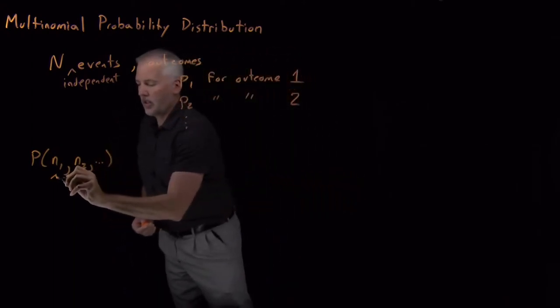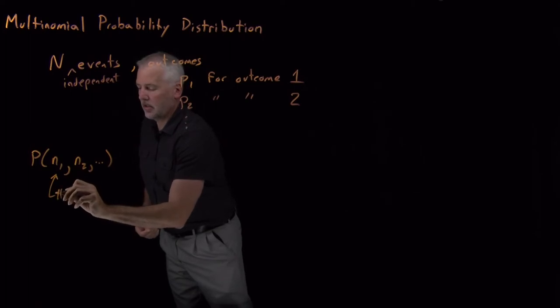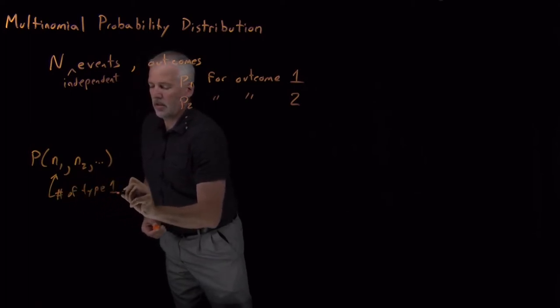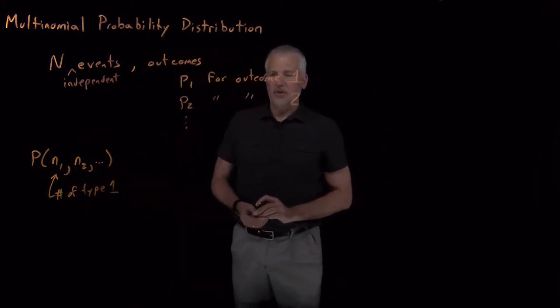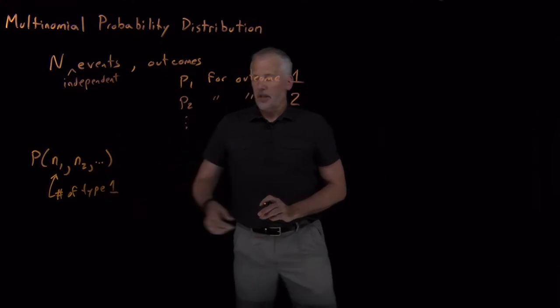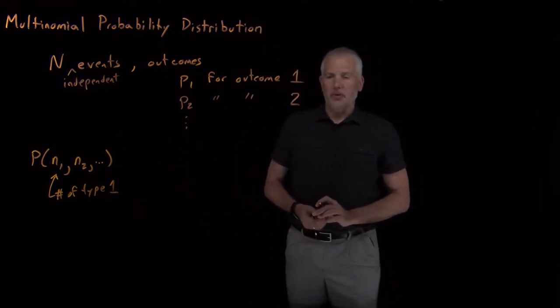So these numbers are, n1 is the number of outcomes that we see out of these grand total of capital N that have type 1, and n2 would be the number of type 2, and so on.